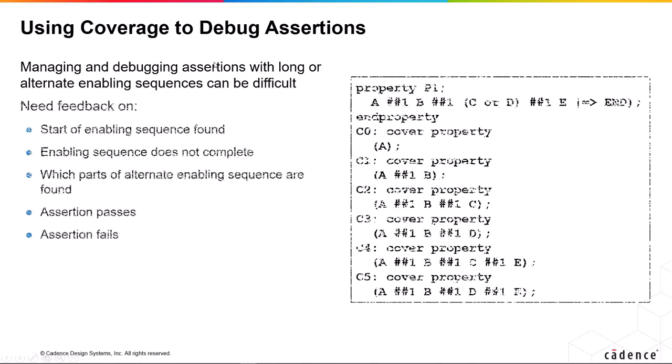We might also want to use coverage to debug assertions. So let's say we have a property like this, and again, this is probably a good example of what not to write. So having a left-hand side like that, there's multiple ways in which it can occur.